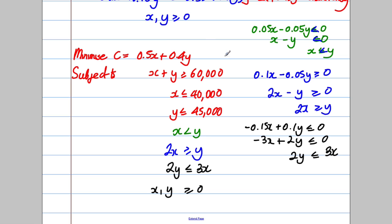So here's our complete problem: we're minimizing C = 0.5x + 0.4y, subject to all seven constraints: x + y ≥ 60,000; x ≤ 40,000; y ≤ 45,000; x < y; 2x ≥ y; 2y ≤ 3x; and x, y ≥ 0. And we are done.